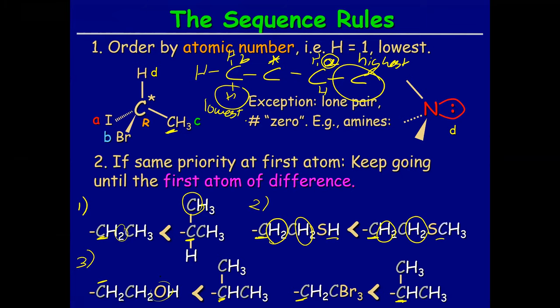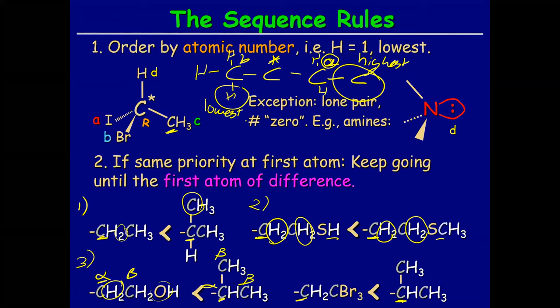In example number three you have something a bit different, because the oxygen is not joined to the carbon closest to your chiral carbon. First we have to analyze the alpha carbon. Do you know the terms alpha, beta, gamma for carbons? The alpha carbon has two beta carbons attached to it, and two beta carbons will beat one beta carbon. So the alpha with two beta carbons has higher priority.